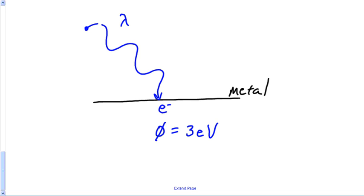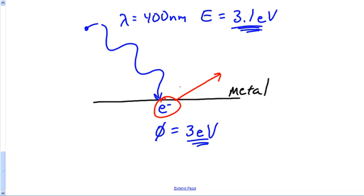This is how much energy my photon has. Now I'm going to redraw that picture. So here is my piece of metal. And here's my electron. And I said that that electron has a phi of 3. Now that's basically how tightly this electron is being held on to. And here comes the photon. And that photon had a wavelength of 400. And you just found it has an energy of 3.1 electron volts.